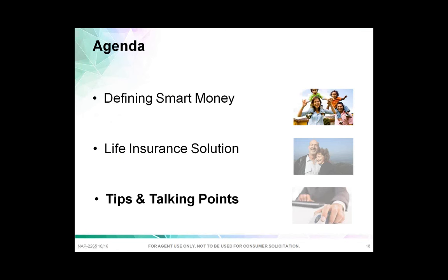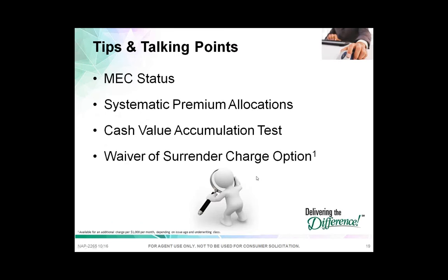For tips and talking points: you may be wondering how we can put a lump sum in and still lower the death benefit. We're purposely making this a MEC — a modified endowment contract — using the cash value accumulation test, which allows us to drop the death benefit down as low as equal to the premium. In this scenario, distributions from the policy are treated similarly to an annuity — last in, first out — so you're actually pulling interest out first.